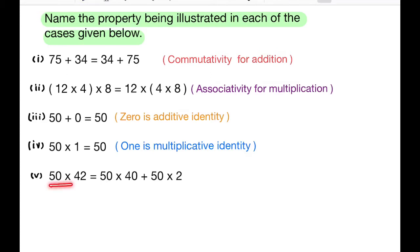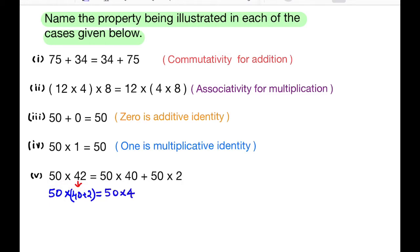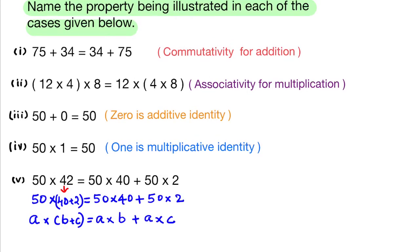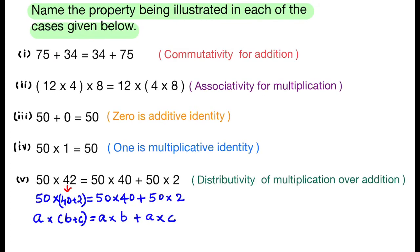Fifth question: 50 × 42 = 50 × 40 + 50 × 2. Here 42 is written as 40 + 2, so 50 × (40 + 2) = 50 × 40 + 50 × 2. In general, for any three whole numbers a, b, and c: a × (b + c) = a × b + a × c. This property is called the distributive property of multiplication over addition.